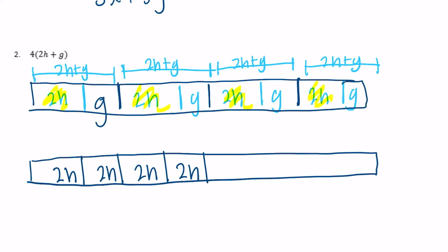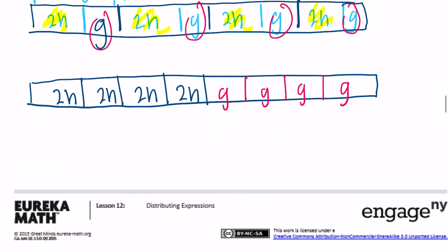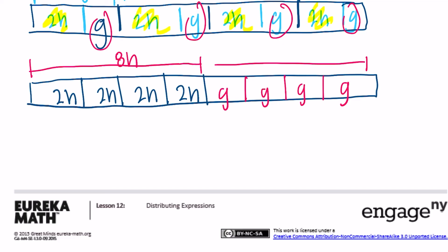After regrouping, we have 8 h's and 4 g's, giving us the equivalent expression 8h plus 4g.